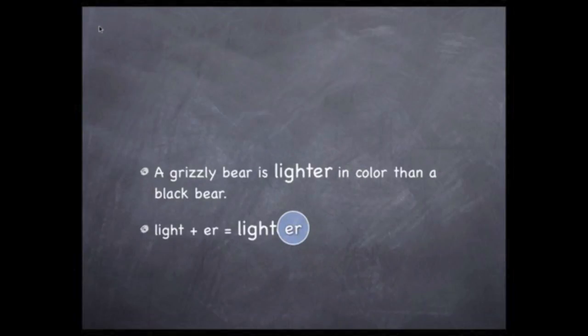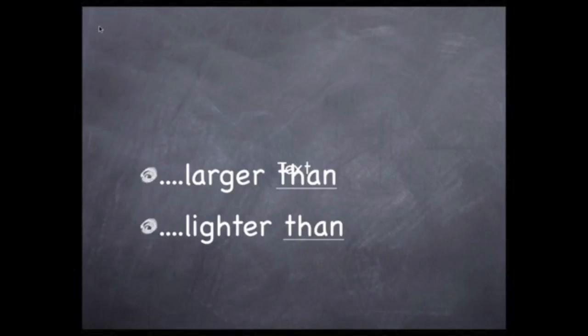Now let's look at the feature of color. We could say that a grizzly bear is lighter in color than a black bear. The word light does not end in an e, so we add both the e and the r to the end of that word to form the comparative. Notice that in both examples, we use the word than to show that we're illustrating a difference. We're contrasting the same feature of different animals.